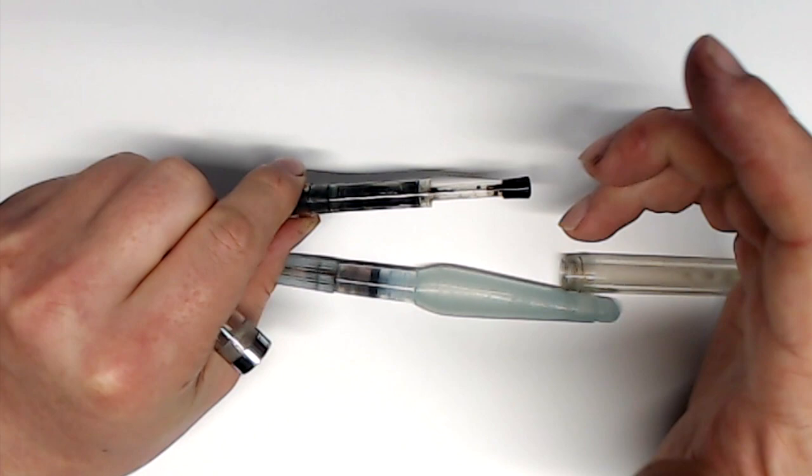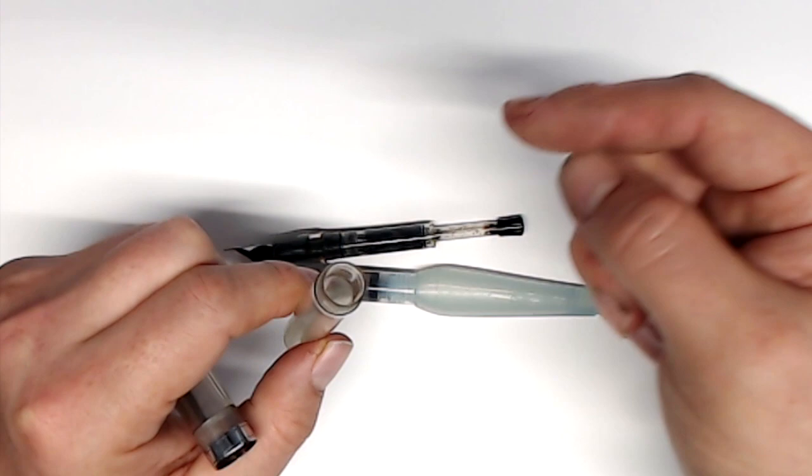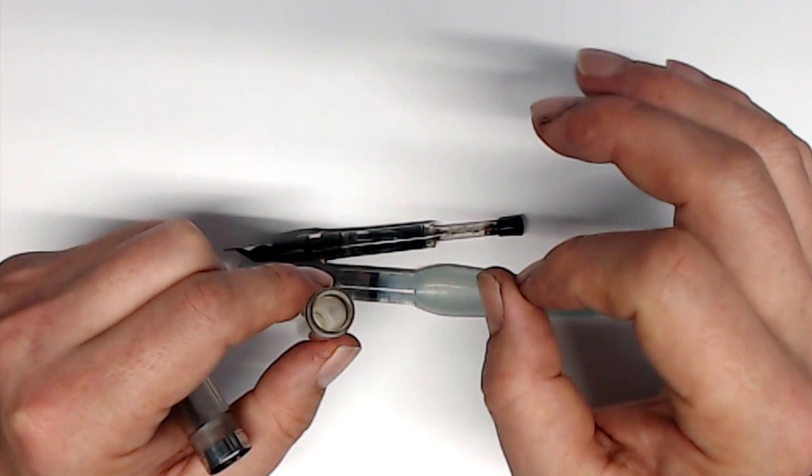So you can't fill an entire bottle of ink in there, but I believe it's something like three milliliters, which is quite a lot. Noodler's also sells refillable sealable cartridges, which are fantastic for traveling, and I believe they're the only company that does this. Let's put this pen back together.